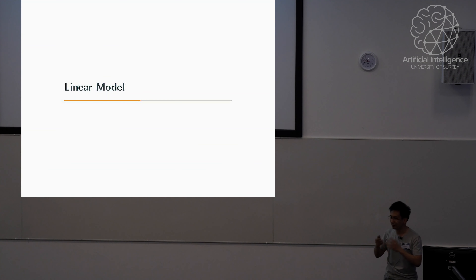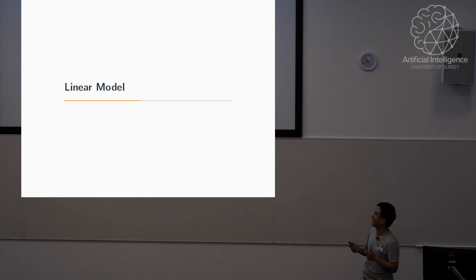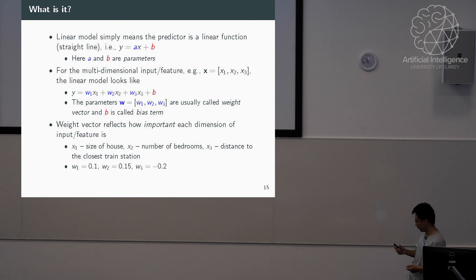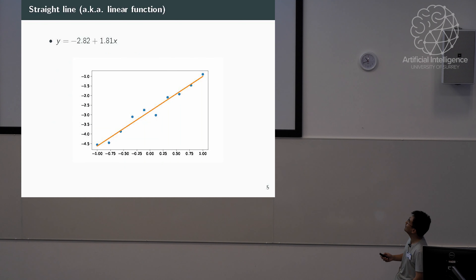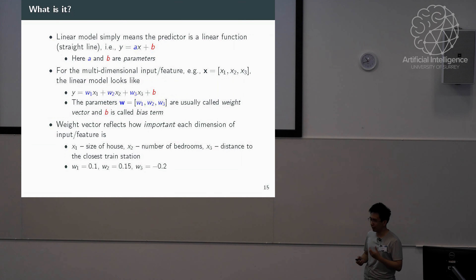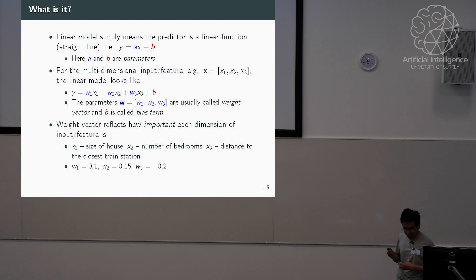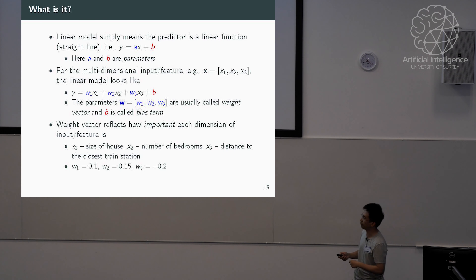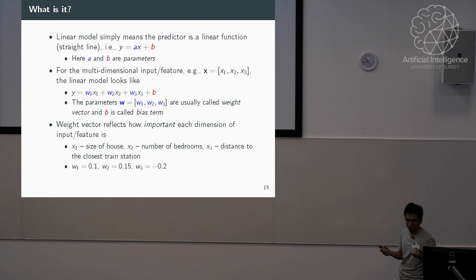Let's talk about the linear model, since it's the easiest and most straightforward. A linear model is just a linear function — no scary higher-order terms. For a single variable case, you have one scalar x, multiply it by a number a, and add a bias term, and it gives you a prediction.